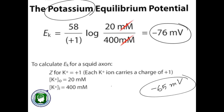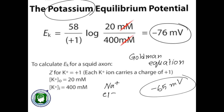This is because resting neurons are also slightly permeable to other ions like sodium and chloride. So the Nernst equation can only take into account one ion. Therefore, there is a requirement for another equation — the Goldman equation. This Goldman equation takes all the ions that can cross the cell membrane into account and can therefore calculate the membrane potential more accurately.